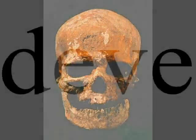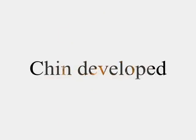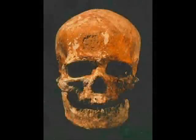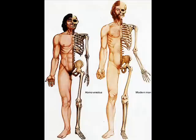Their jaw is also small with smaller teeth compared to any other hominid species. It also has a pronounced chin, which is different from any other hominid species before it. As you can see, there are many things that are different cranially between Homo sapien and Homo erectus.